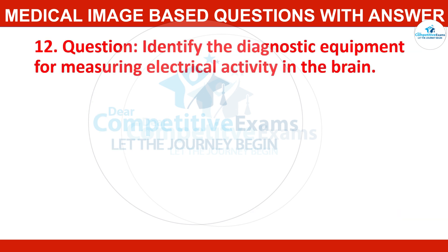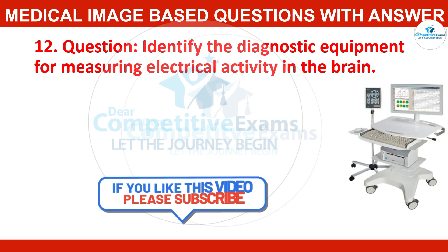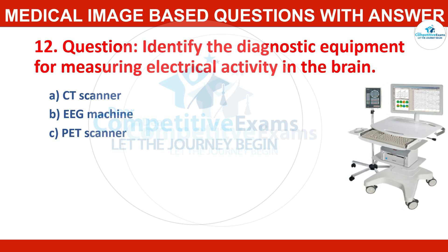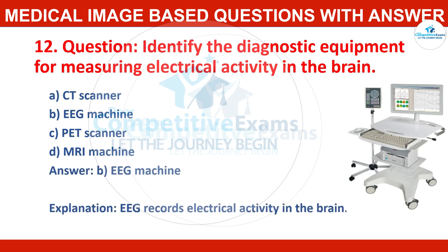Question number twelve: identify the diagnostic equipment for measuring electrical activity in the brain. Options: CT scanner, EEG machine, PET scanner, or MRI machine? Correct answer: EEG machine. The EEG machine records electrical activity in the brain.